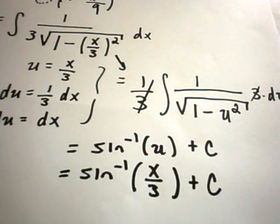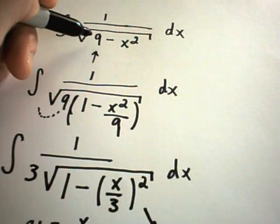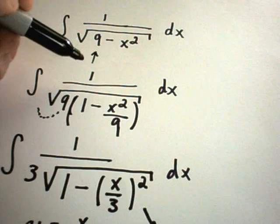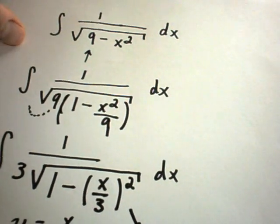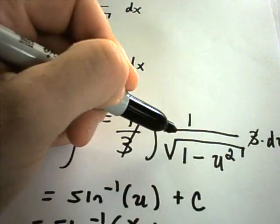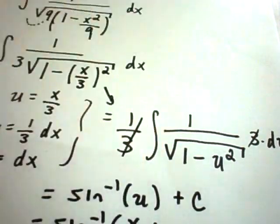So the thing to catch on these inverse trig functions is you really have to make it look just like one of those formulas. Notice I started with a 9 minus x squared, but by doing some algebra and a u substitution, I was able to make it look like one of those formulas: 1 over the square root of 1 minus a variable squared.